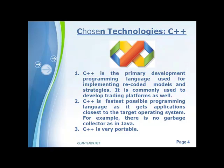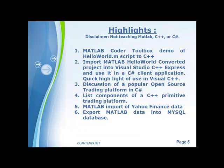Our second chosen technology is C++. It's the primary development language for implementing recoded models and strategies, and is commonly used in trading platforms. From job searches, it's the number one requested skill set in quant trading. C++ is also probably the fastest possible programming language, close to the target operating system — for instance, there's no garbage collection as in Java — and it's very portable across various operating systems.